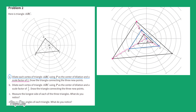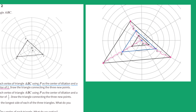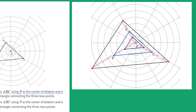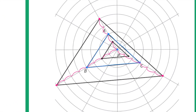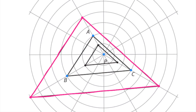Now I'll do the same with point C. I move from center point P straight through point C, and I notice that point C is three units away from center point P. With a scale factor of two, I double three: three times two equals six. So the new point for C will be six units away from center point P. Then I draw the triangle connecting the three new points.